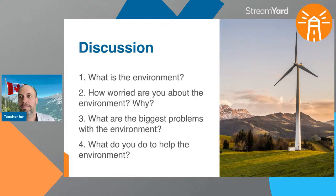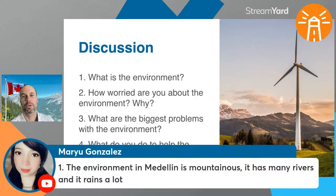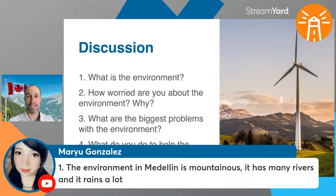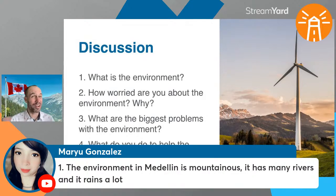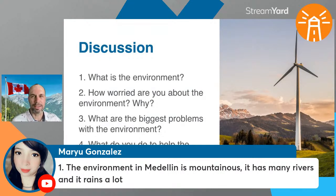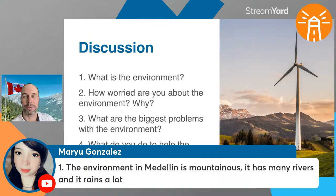Maryu is first. Let's check out her answer to number one: 'The environment in Medellin is mountainous' — good word, mountainous. 'It has lots of mountains, many rivers, and it rains a lot.' Great sentence, I like that very much. Excellent! I think you forgot your period at the end, but other than that, great sentence, Maryu.